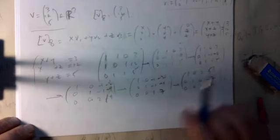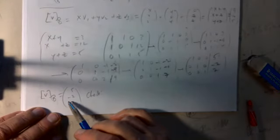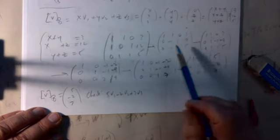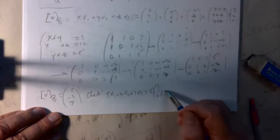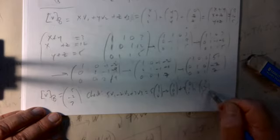Let's verify: 5·v₁ − 2·v₂ + 7·v₃ = 5·(1,1,0) − 2·(1,0,1) + 7·(0,1,1) = (5−2+0, 5+0+7, 0−2+7) = (3, 12, 5). Everything works out correctly.